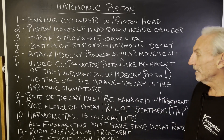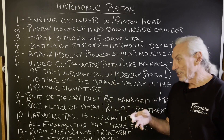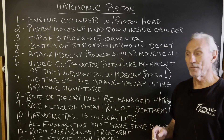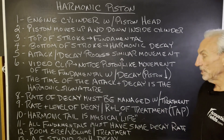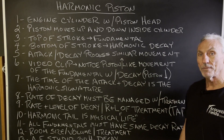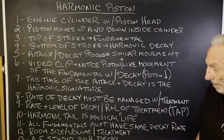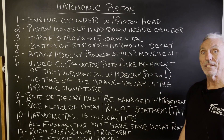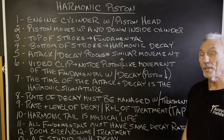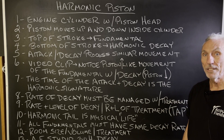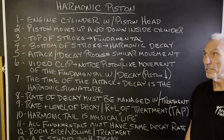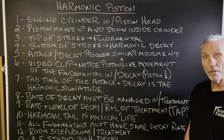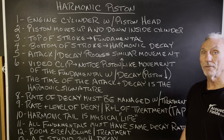We want to make sure the attack and decay of that harmonic signature is similar, and that has to be managed with treatment. We've got to have the right amount of treatment — the correct type, amount, and position. That's our acronym: TAP — type, amount, and position. So the harmonic tail, that decay rate, is where the life of the music exists. It's difficult, especially with low frequencies, and very difficult with the treatment technologies in the marketplace right now, except for our carbon technology, which is the most powerful available.